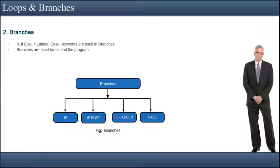In a conditional branching statement, a condition is evaluated and branches are used to control the program. If the expression is true, then the statement or block of statements gets executed; otherwise, these statements are skipped.